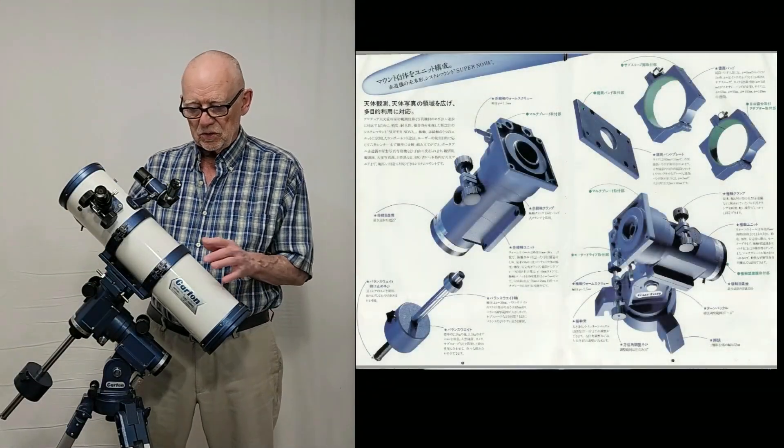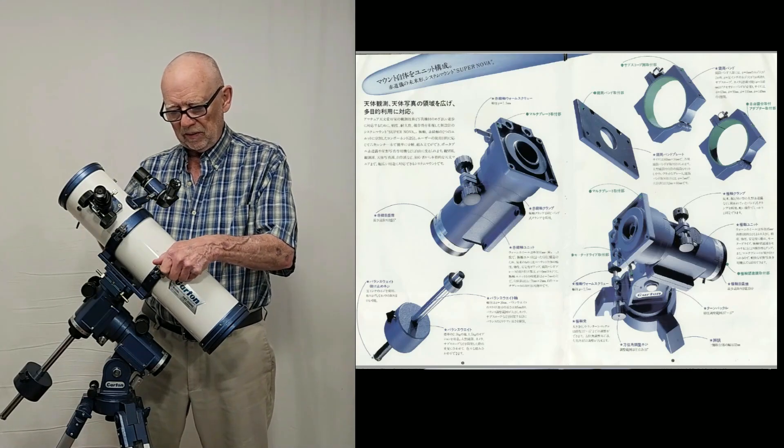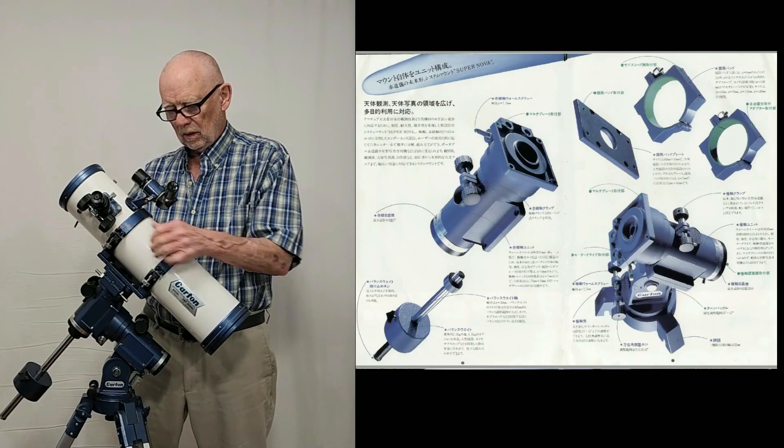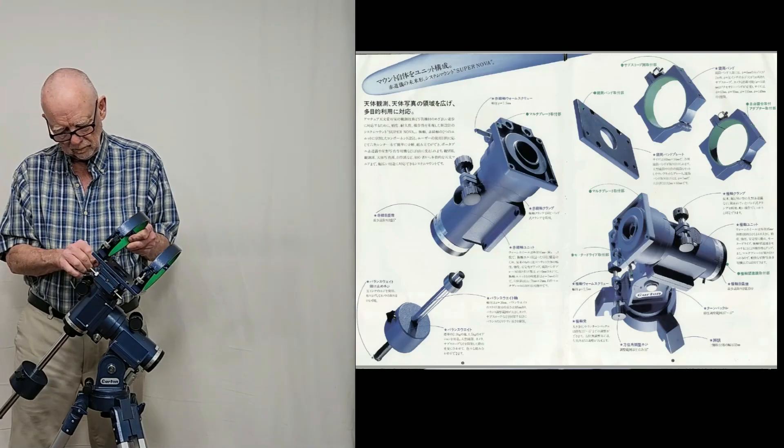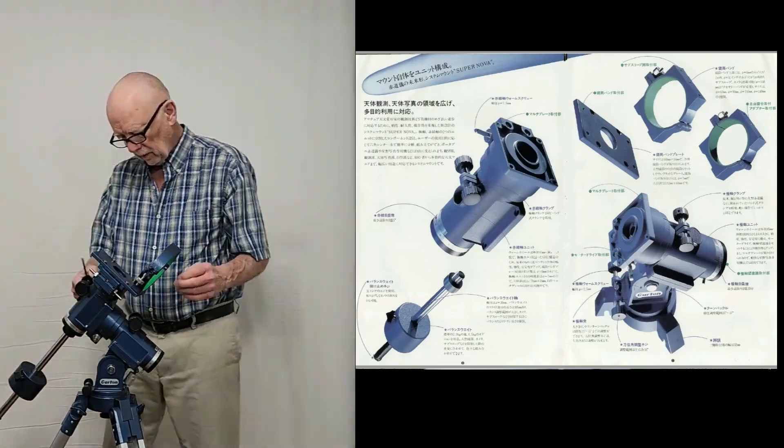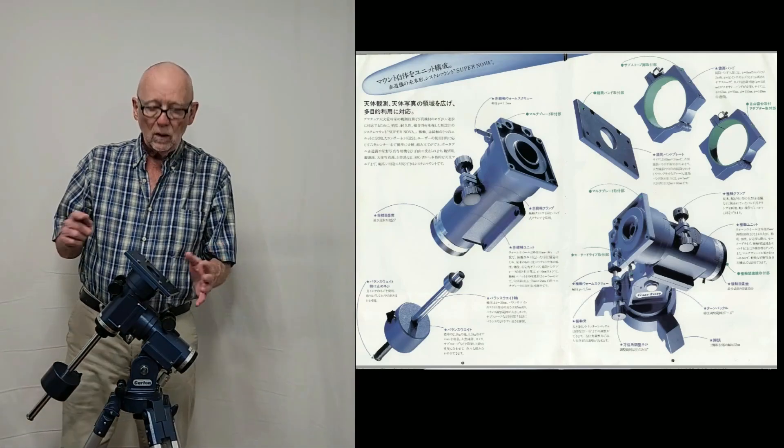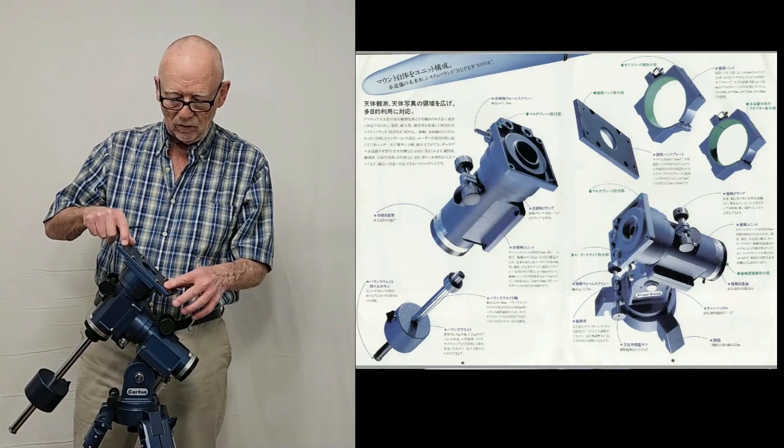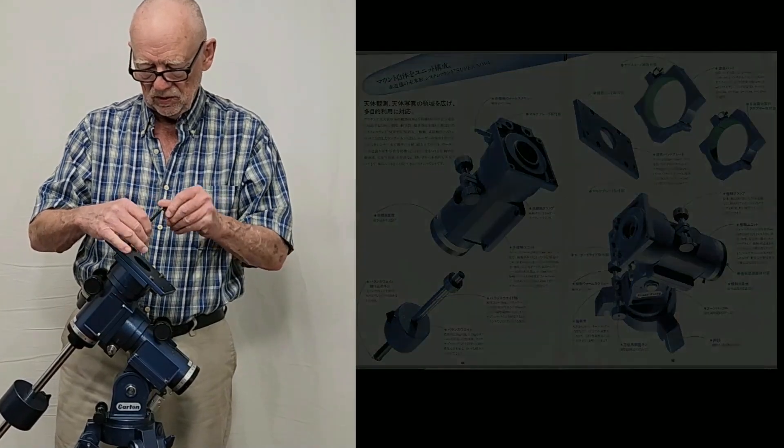One of the key design features of this scope is that the mount is modular. Let me show you what that means. I'm going to take the thing apart here. Now that the rings are removed, we have this little plate here. You could mount things to this plate. They had a special accessory plate for this. So this plate comes off. I don't have an original accessory plate, but I made this one.